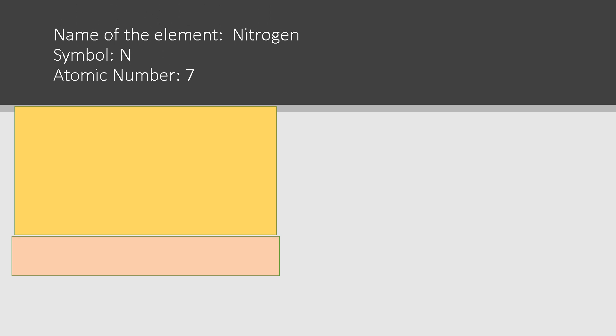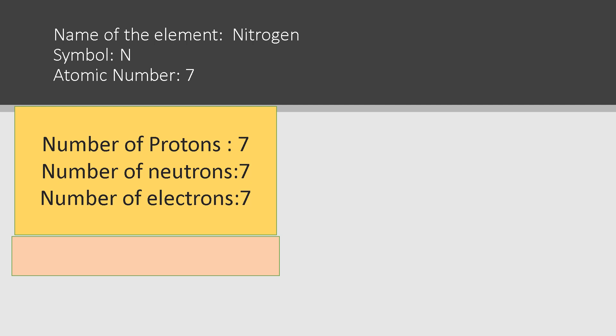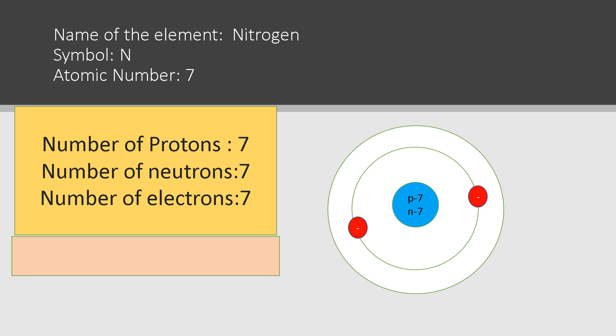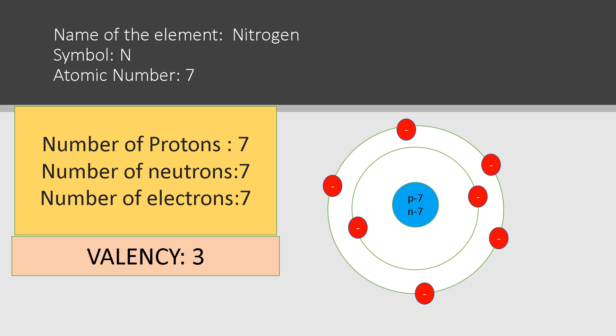Next we have nitrogen. Symbol N, atomic number seven, protons seven, neutrons seven, electrons seven. The valency of nitrogen is three, as nitrogen has five electrons in its valence shell and can therefore accept three electrons to complete its octet.